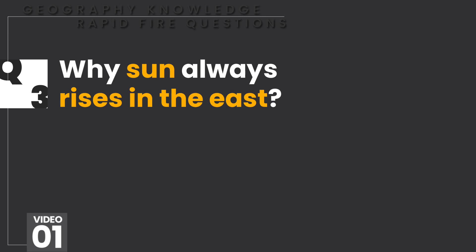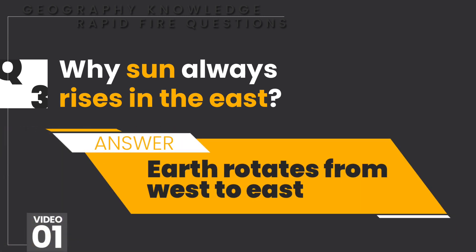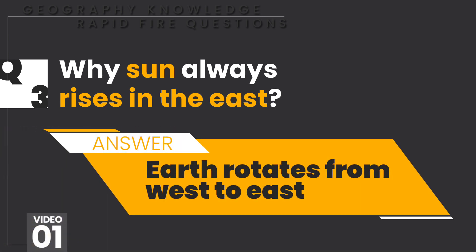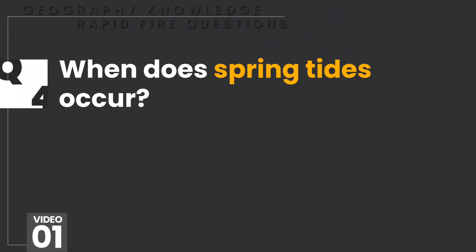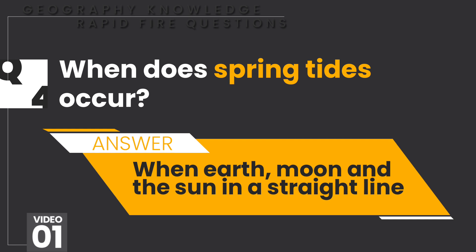Because the earth rotates from west to east. When does spring tide occur? When the moon and the sun are in a straight line.